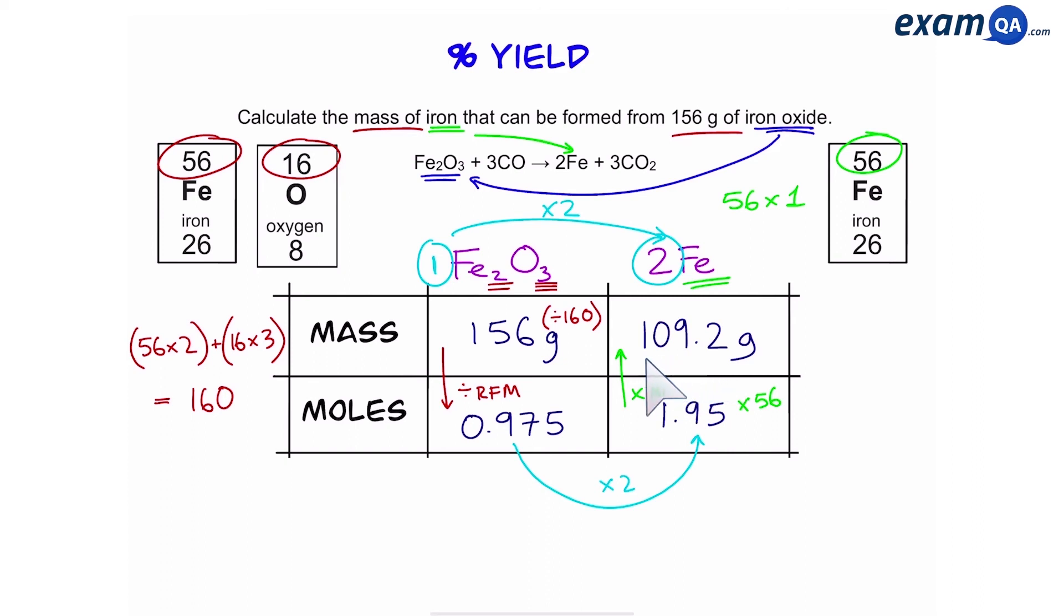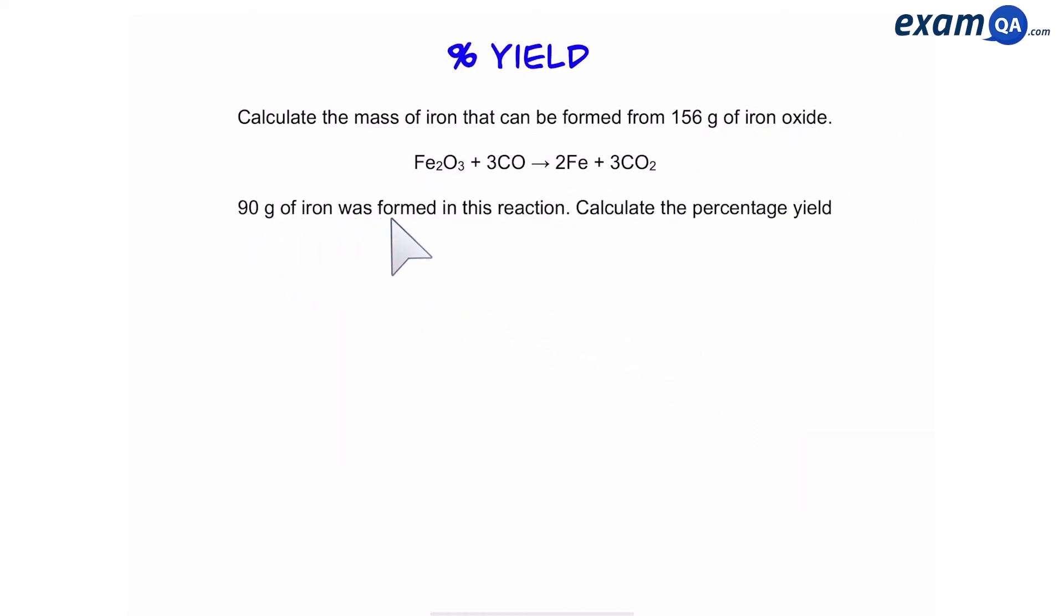So 156 grams of iron oxide gives us 109.2 grams of iron. Here's the next part: 90 grams was formed in this reaction. Calculate the percentage yield.